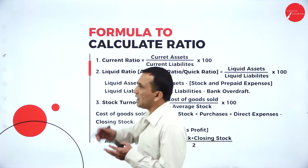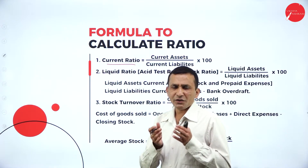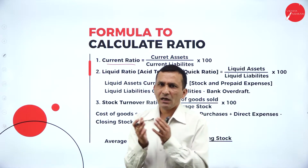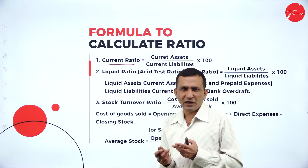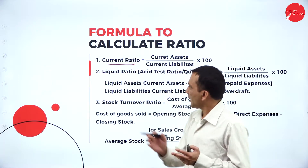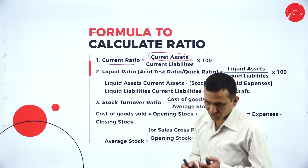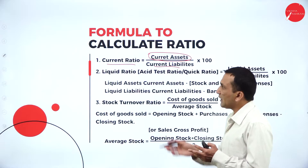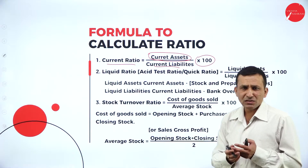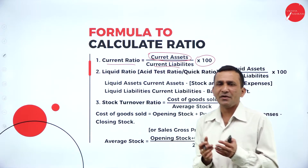Moving forward, the first one coming under the liquidity ratio is the current ratio, which requires recalling the balance sheet. Under the balance sheet, on the asset side, there are two items we identify: non-current assets and current assets. The formula is very simple: current assets divided by current liabilities.